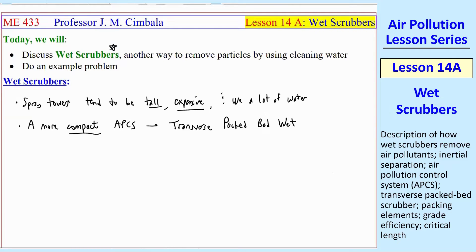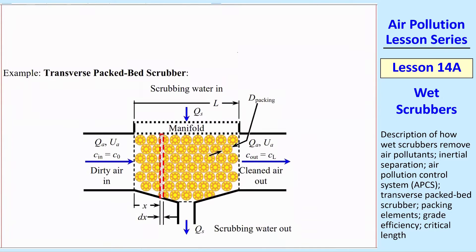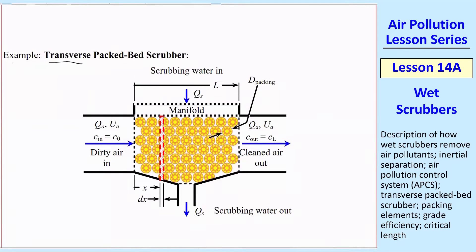Specifically a transverse packed bed wet scrubber. I have a schematic diagram here. It's transverse because the air flows to the right with the dirty particles, and the water flows from the top to the bottom. Unlike a spray tower, this does not have shower heads or anything.